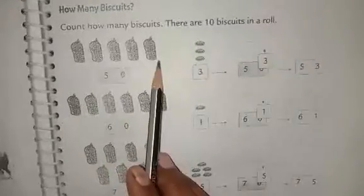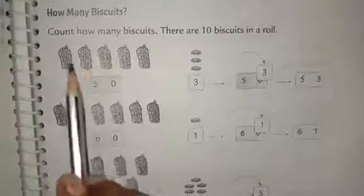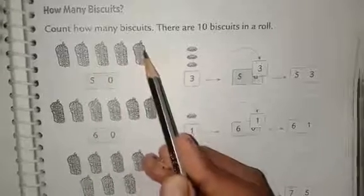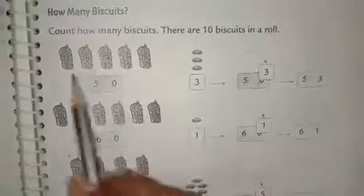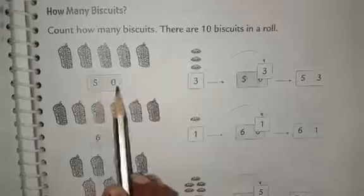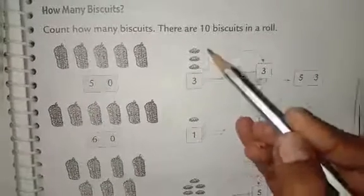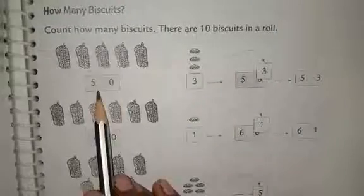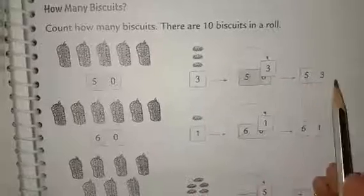So count how many rolls are here: 1, 2, 3, 4, and 5. Each roll has 10 biscuits, so these are 5 tens. 5 tens means 50. And there are 3 loose biscuits, which means 3. So 5 tens and 3 ones — it becomes the number 53.